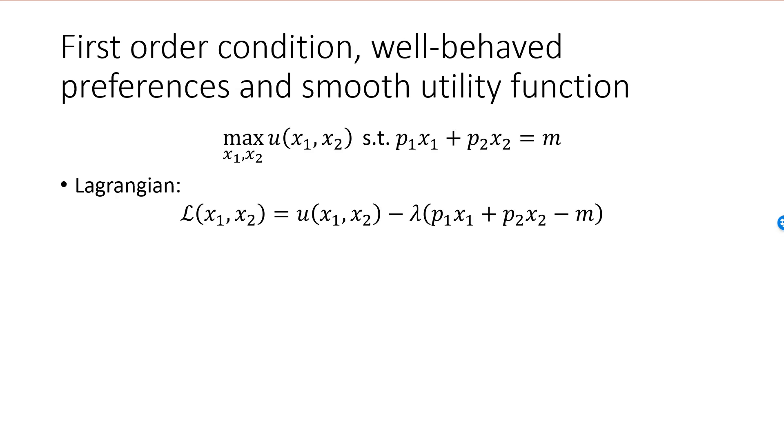From this, we can derive the first order condition that an interior optimal bundle must satisfy. It is mu1 divided by mu2 must be equal to p1 over p2. Since mu1 over mu2 is equal to minus MRS, we see that MRS must be equal to minus p1 over p2 at the optimal choice.